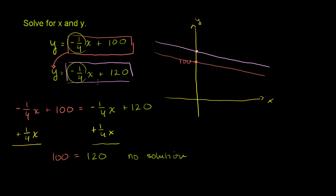Another way to think about it, if you take an x, this first equation says, OK, you take your x, multiply it by negative 1/4, and add 100, and that's going to give you y. Now, here we say, well, you take that same x, and you multiply it by negative 1/4, and add 120, and that has to be equal to y.